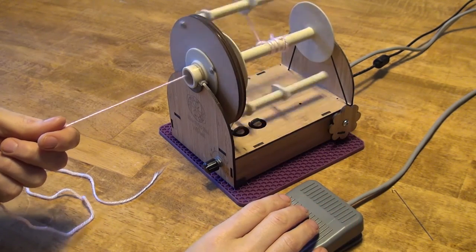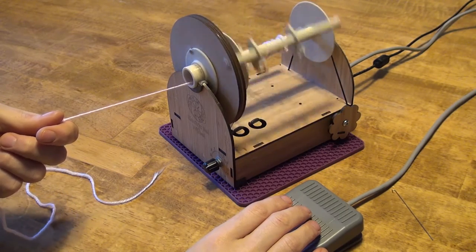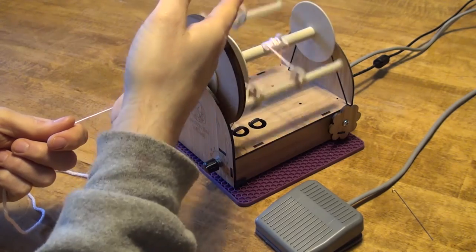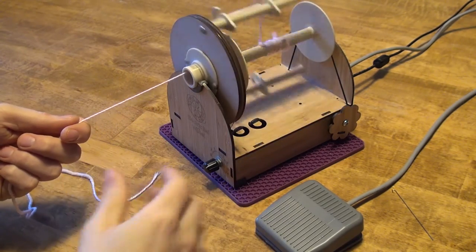And now at this point, it is pulling it out of my hand. So that's good. It's pulling it on. And at this point, you're spinning. You're applying twist and it's slowly pulling it onto the bobbin.